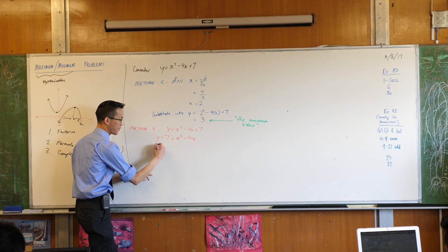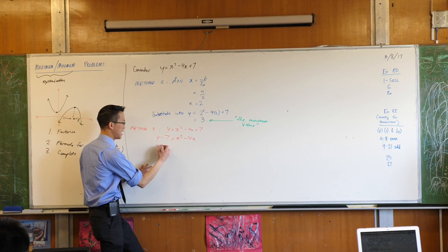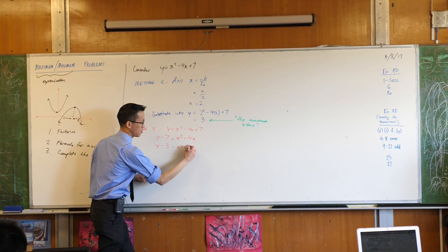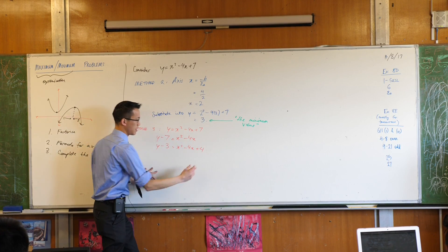So what's the thing I have to add to both sides? 4. That turns this into negative 3. That turns this into and so on.